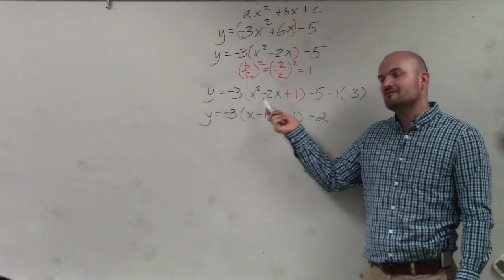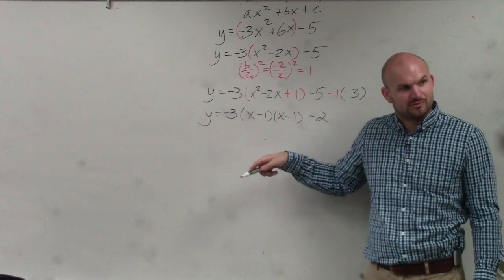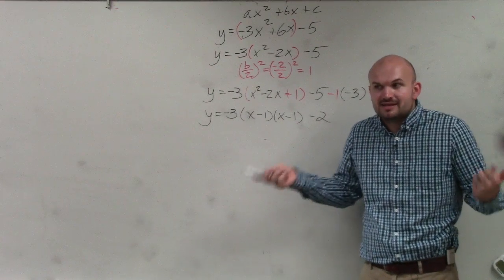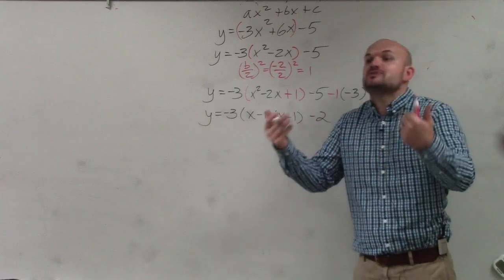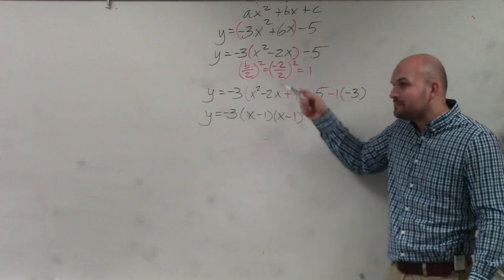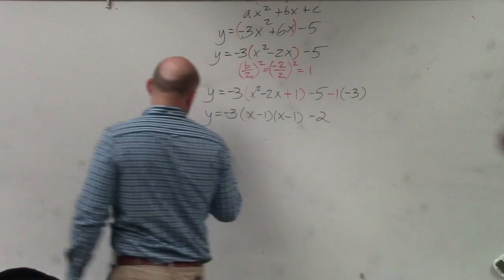All perfect square trinomials are factorable to a binomial squared. That's why we like getting perfect square trinomials. That's why we complete the square. To produce a perfect square trinomial that can be factored to a binomial squared.